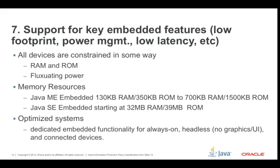Number seven: support for key embedded features such as low footprint, power management, and low latency. All devices running in a Java environment are constrained in some way. In the embedded space, they're often constrained on RAM, ROM, or fluctuating/limited power. Java ME Embedded can run in 130KB of RAM and 350KB of ROM, or up to 700KB of RAM and 150KB of ROM — a great environment for small, tight embedded systems.